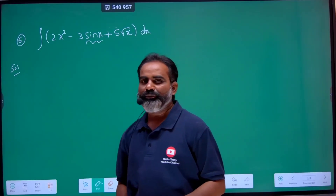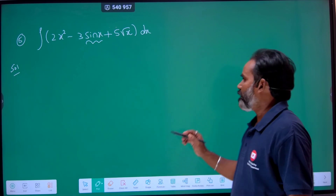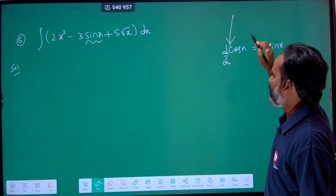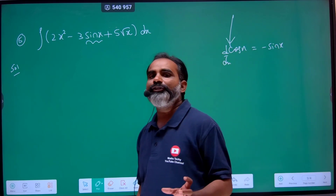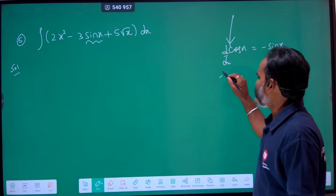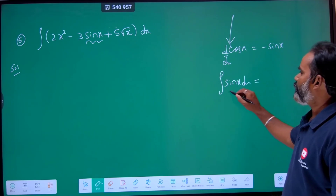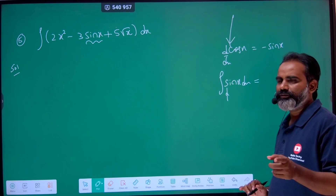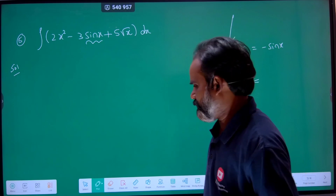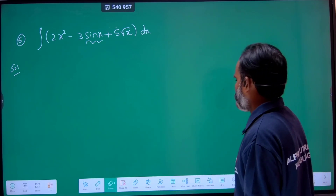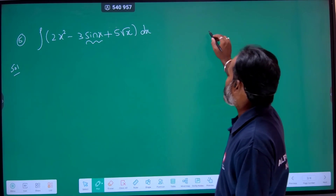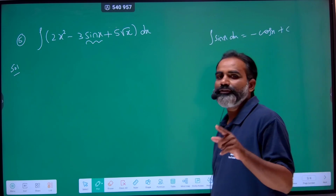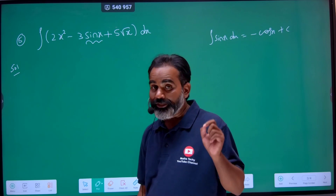Question number 5: differentiation of cos x is minus sin x. If you think about the integration of sin x dx — there is some confusion. The differentiation of cos x is minus sin x, but the integration of sin x is minus cos x plus c. Remember: integration of sin x dx equals minus cos x plus c.